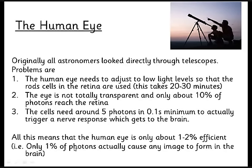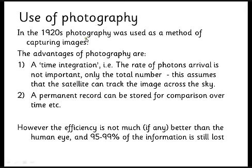As soon as it was possible, astronomers moved away from using their own eyes to look at things, and the first step was to introduce photography. By around the 1920s, photography had got fairly good and they had fairly sensitive photographic plates. The key advantage of photography is this idea of time integration.